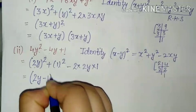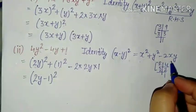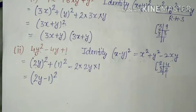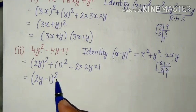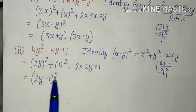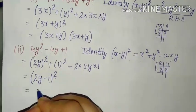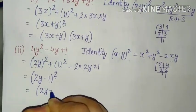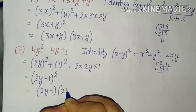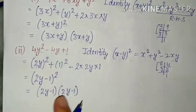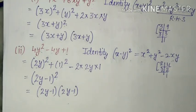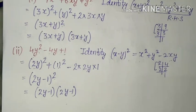So 2y minus 1 ka whole square — kyunki isme third term minus ki thi, to beech mein minus ka sign aa jaega. Ab isme bhi hame factors banana hai. Power 2 hai, to isko hum kitne time likh sakte hain? 2 times. So iske factors kya banenge? (2y − 1) and (2y − 1). Very easy questions hain — just identity aapki correct honi chahiye.